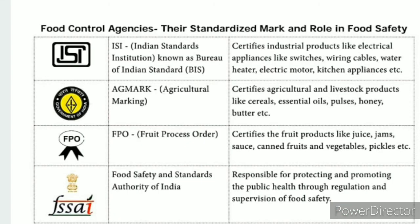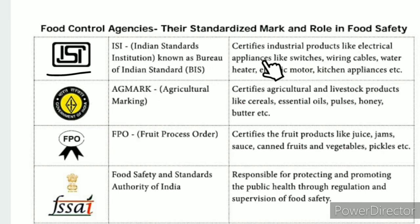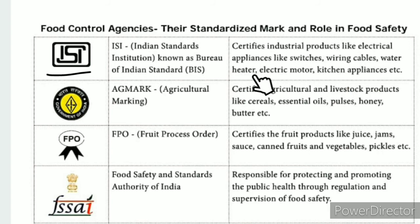Food Control Agencies: Standardized Mark and its role in Food Safety. The ISI mark comes from the Bureau of Indian Standards (BIS). It is used for industrial products such as electrical appliances, wiring cable, water heaters, electric motors, and kitchen appliances. For example, a cooker should have an ISI mark.